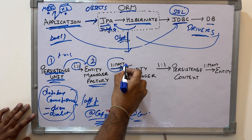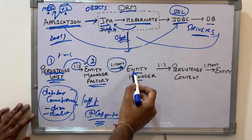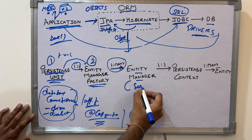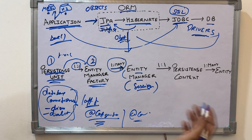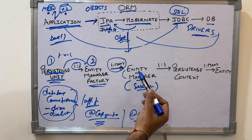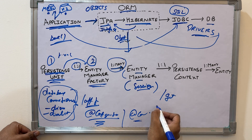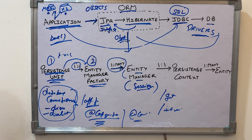The next part is the Entity Manager, which is a very important component. It has a one-to-many relationship — from one Entity Manager Factory you can create many Entity Managers. In Hibernate, an Entity Manager is generally known as a session. When you create an Entity Manager object, a session is created and you can connect to the DB.